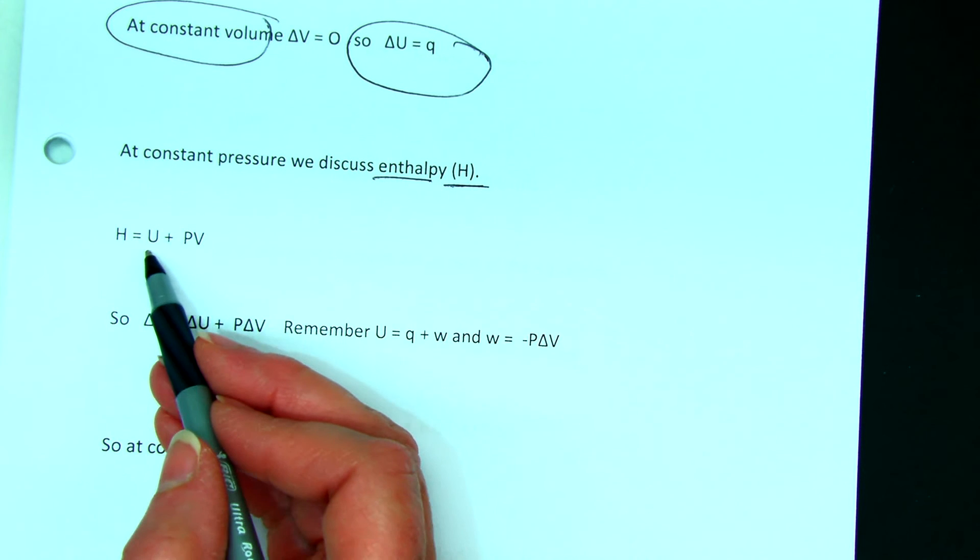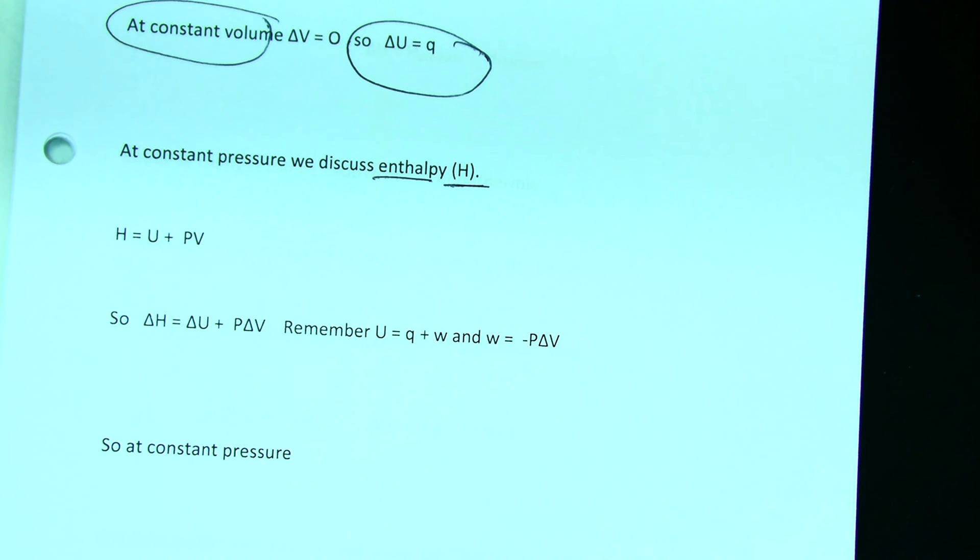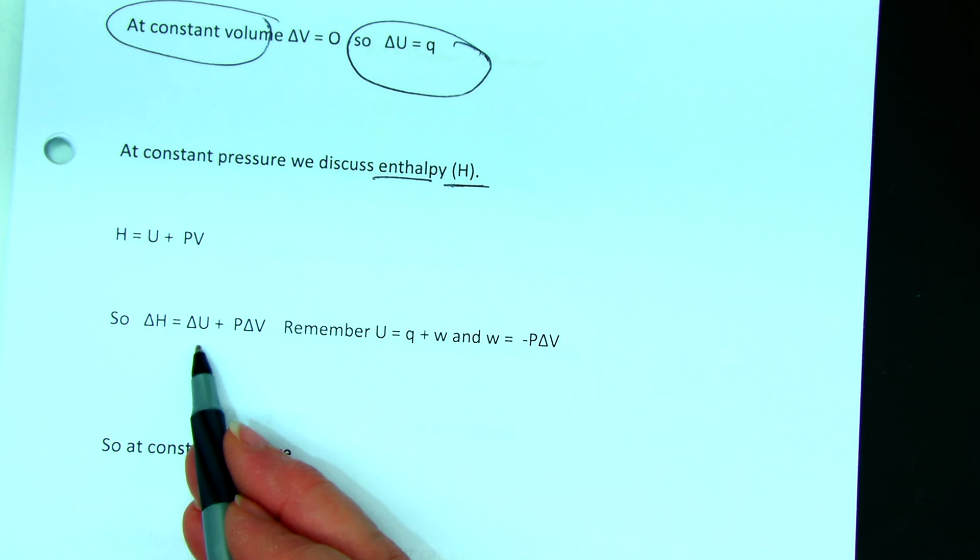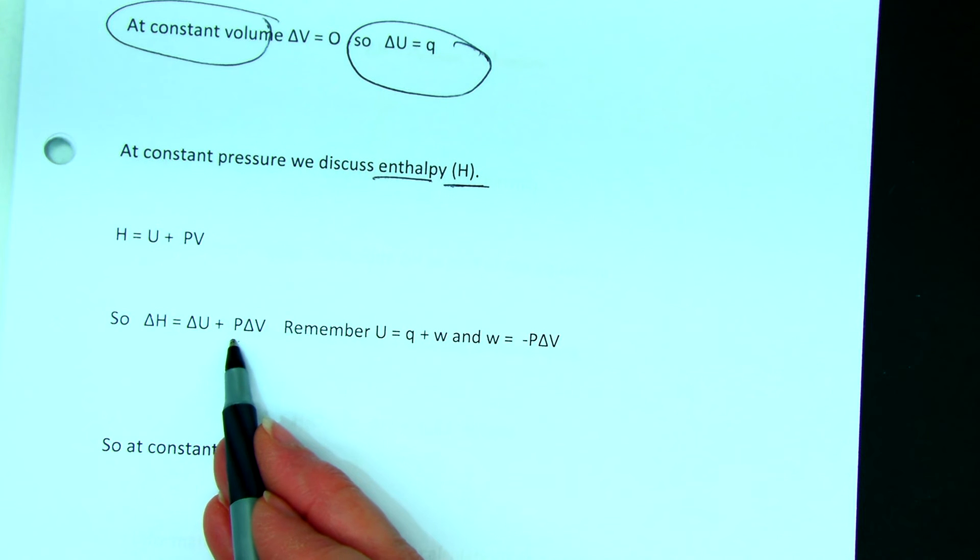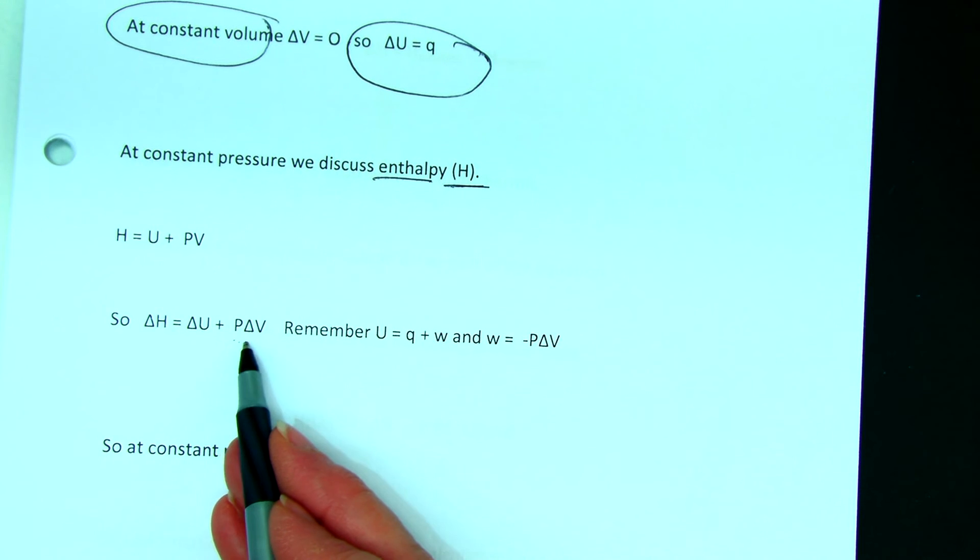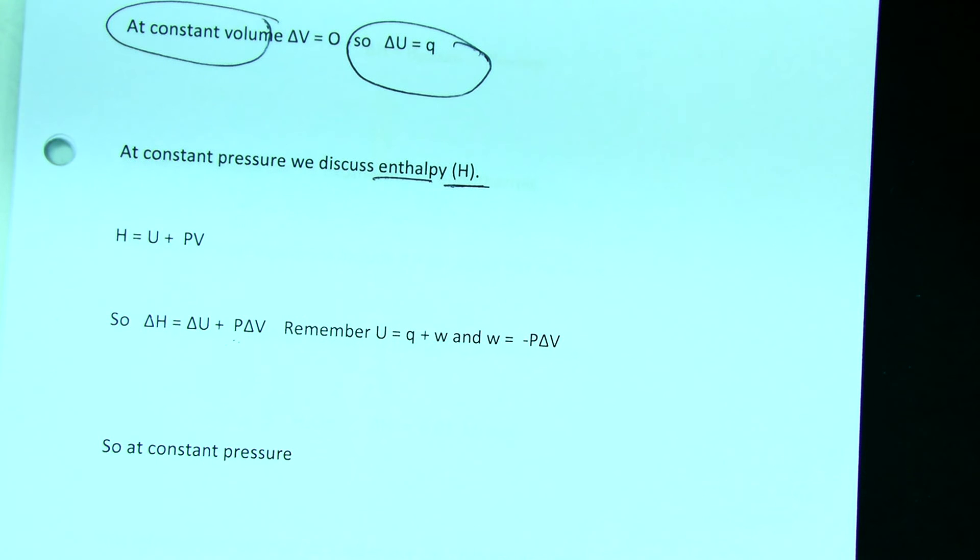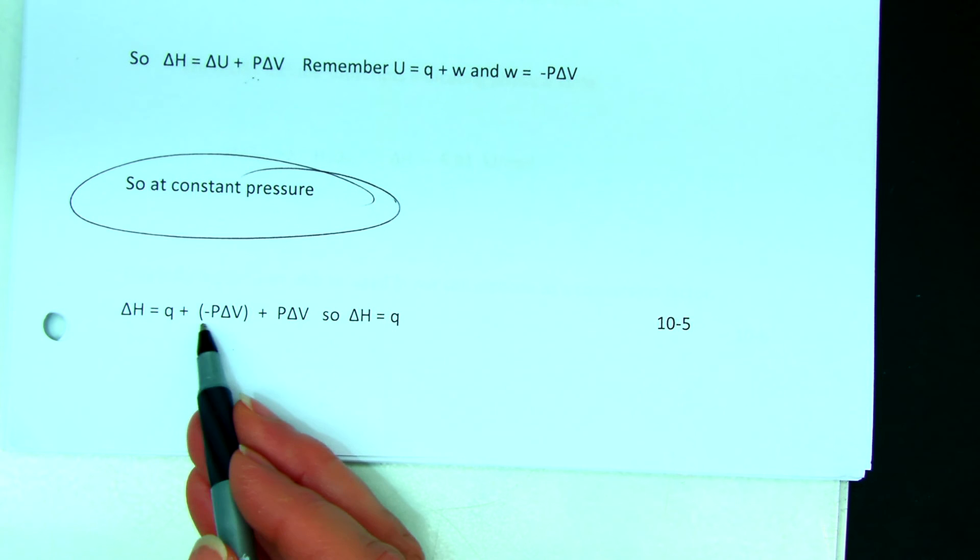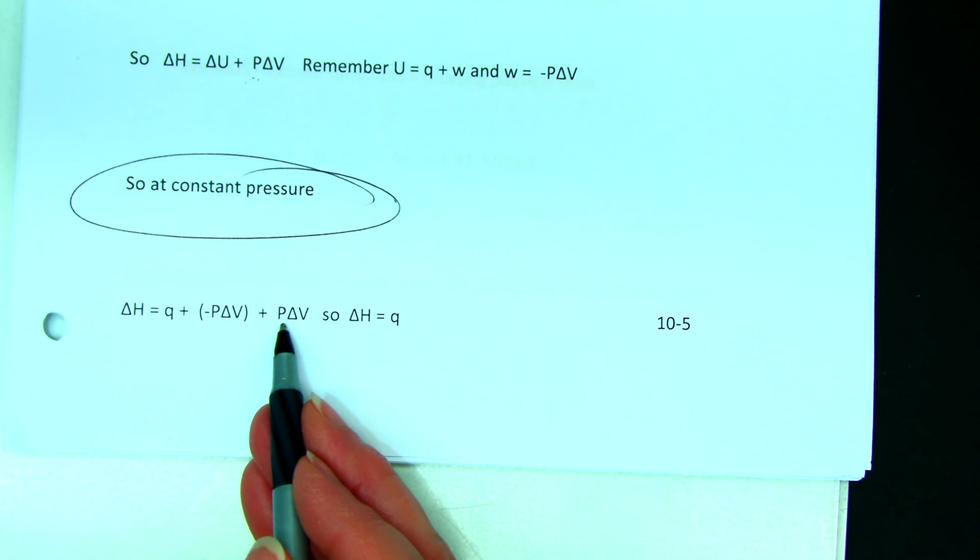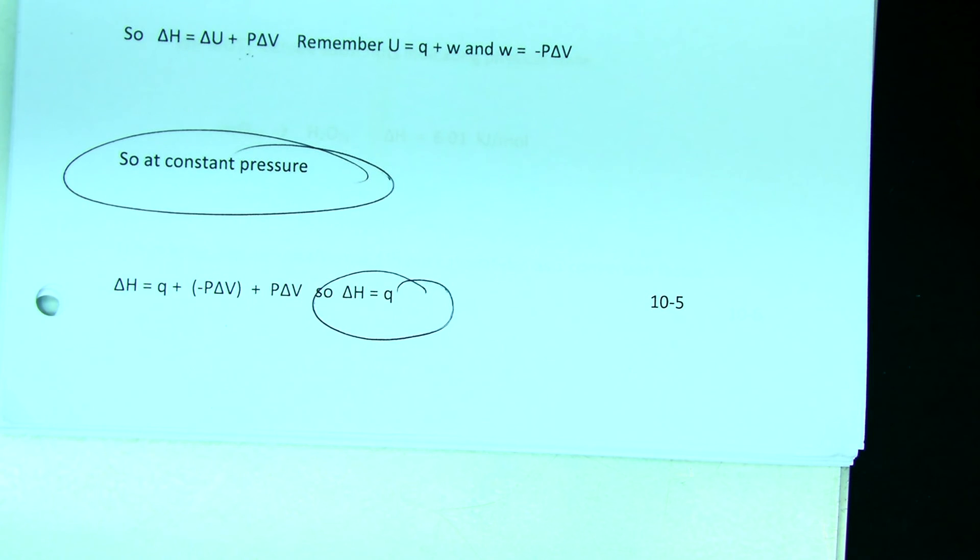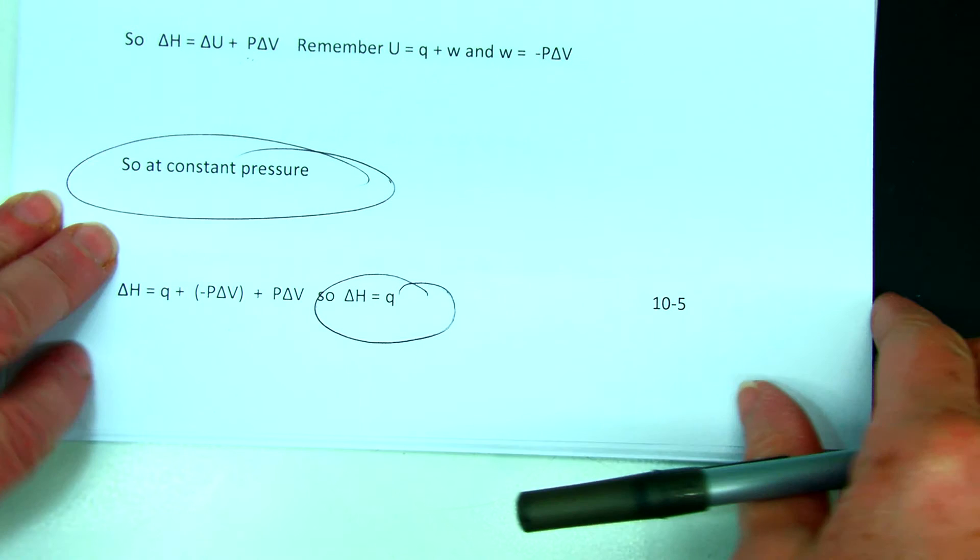Enthalpy is equal to the energy U plus the pressure times the volume. So the change in enthalpy, delta H, is delta U plus delta PV. If we're at constant pressure, then it's P delta V. And U is Q plus W and W is negative P delta V. So at constant pressure, delta H is Q plus negative P delta V plus P delta V. So delta H is equal to Q. And that's all we need to know. So if we are at constant volume or if we are at constant pressure, we only have to worry about heat.